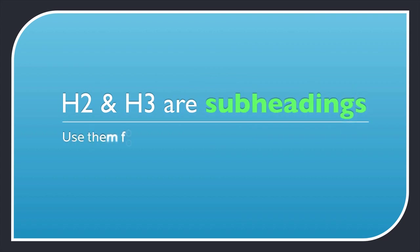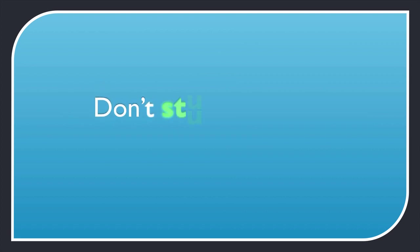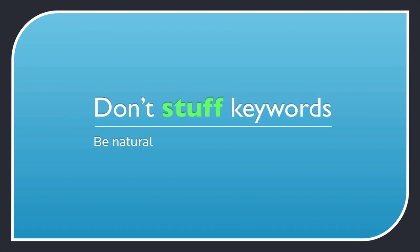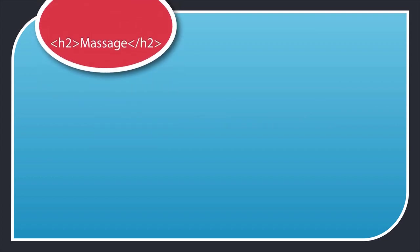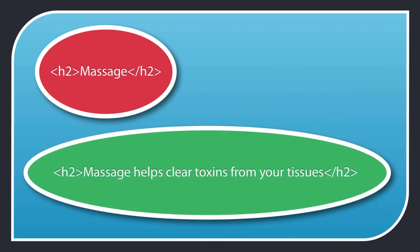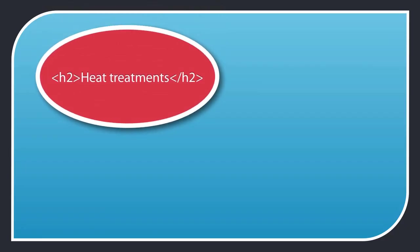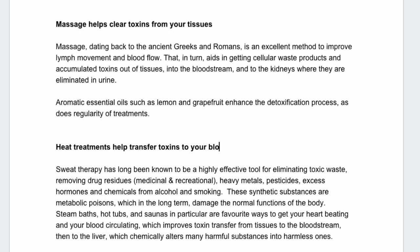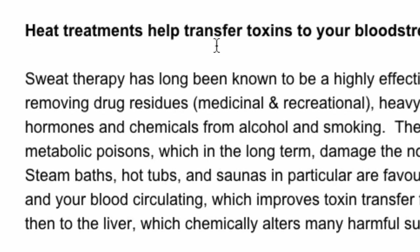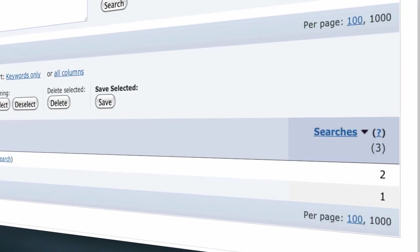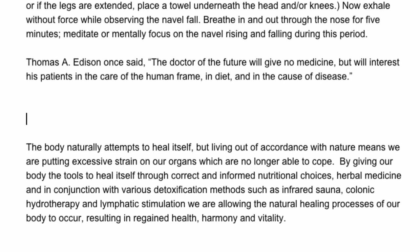H2 and H3 are subheadings. Don't stuff keywords. Working through Debbie's post, instead of the H2 heading that says 'massage,' I'm going to put in something with a benefit and a secondary keyword — 'toxins' — which is closely related to detox. For heat treatments, I'll change that to 'heat treatments help transfer toxins to your bloodstream.' You don't want to use 'sweat therapy' because there's no traffic for that search term. I'll also change the H2 heading 'healing and rebalancing the body' to a variation of the primary keyword detoxify, so the copy makes sense to the reader and to the search engine.